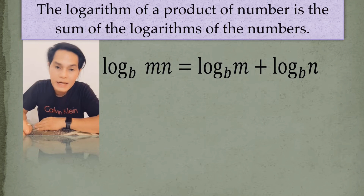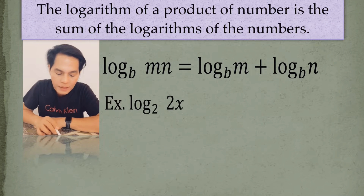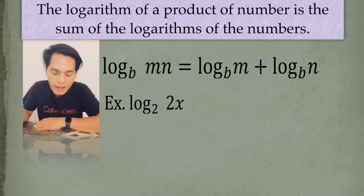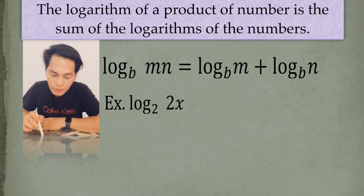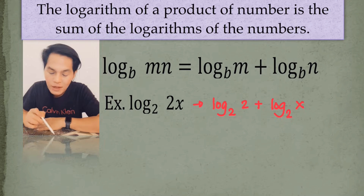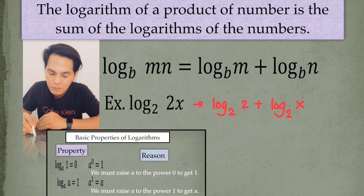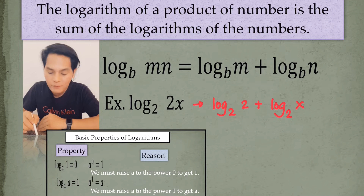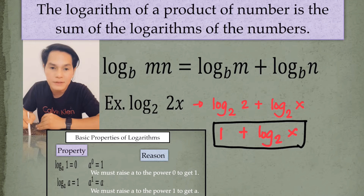In order to understand this, let's have an example. I have here the log of 2x to the base 2. So how are we going to apply this law? We are separating this into a sum: the log of 2 to the base 2 and the log of x to the base 2. Now we apply the properties of logarithm — the log of 2 to the base 2 is equal to 1. So the simplified form is 1 plus the log of x to the base 2.